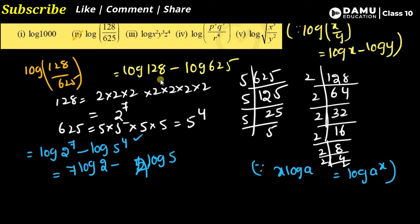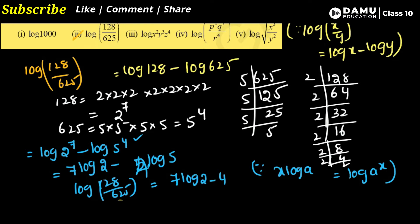Here the exponent is 4, so we get 4·log 5. Therefore, the value of log(128/625) = 7·log 2 − 4·log 5. This is the answer, and that's how we do it.